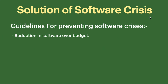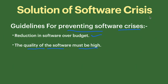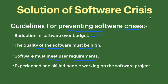What guidelines should we follow to prevent software crisis? First, there should be a reduction in software over-budget — software should not exceed budget. Second, the quality of the software must be high, because if quality is high, the possibility of software crashes will be very low. Third, the software must meet user requirements — if the software fulfills all user requirements, it is considered good software.